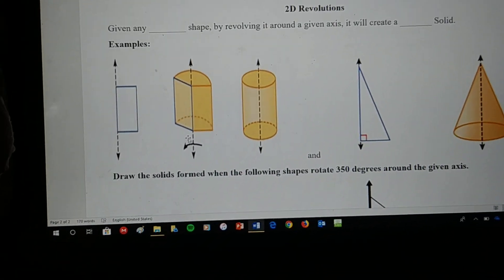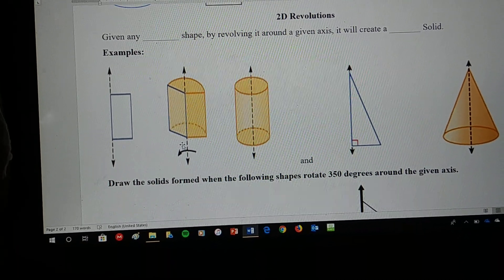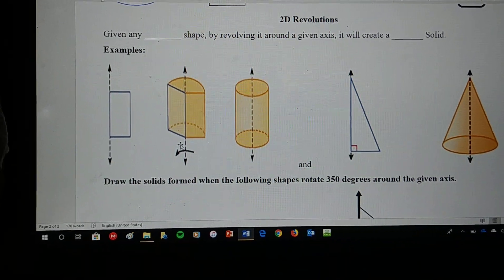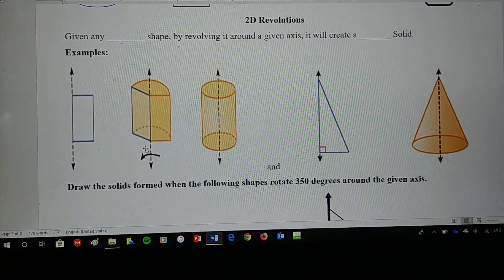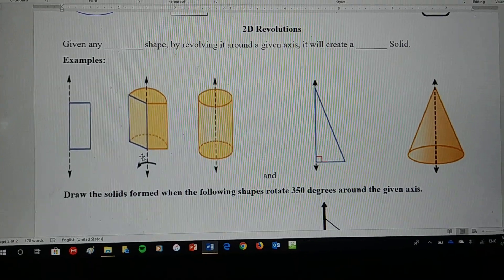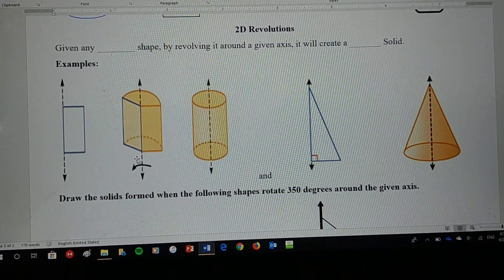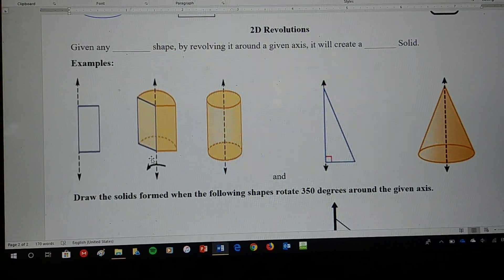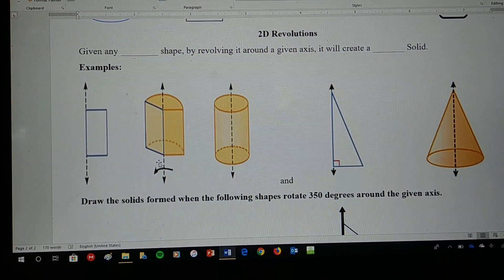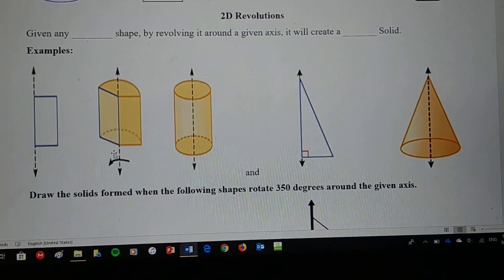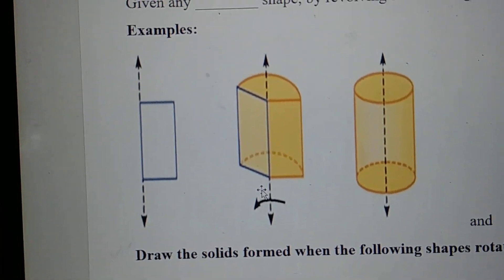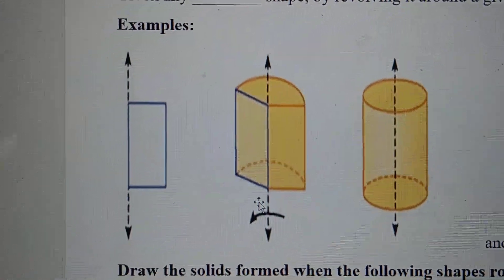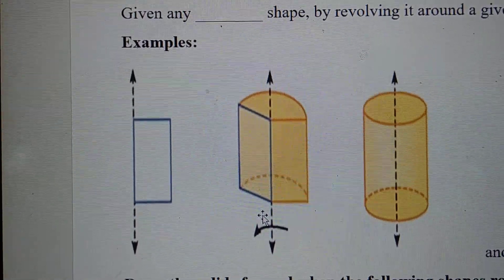Now, two-dimensional revolutions — revolutions of two-dimensional shapes. Given any two-dimensional shape, by revolving it around a given axis it will create a three-dimensional solid. You can put either 2D and 3D, or two-dimensional and three-dimensional. On the first example, we have a rectangle being revolved around this vertical axis.